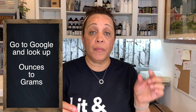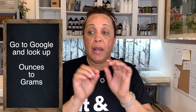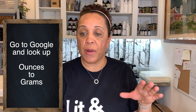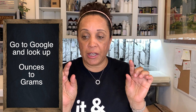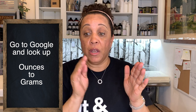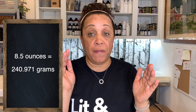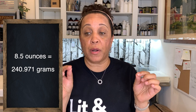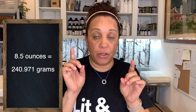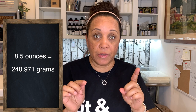If you've weighed something out in ounces or another jar shows ounces, just go on to Google and put in 'ounces to grams' and it's going to bring up a little conversion tool that will allow you to input what the ounces are. For instance, 8.5 ounces is equal to 240.971 grams.